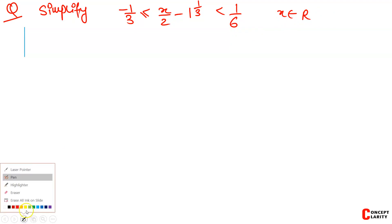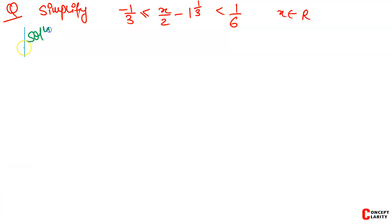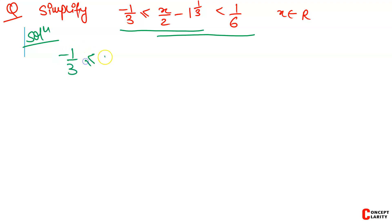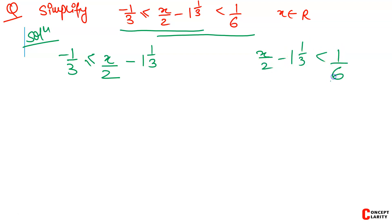How do we do this? I will use a second ink so that you can differentiate. We divide the question into two parts and solve one equation at a time. The first part: minus 1 by 3 is less than or equal to x by 2. And next, x by 2 minus 1 by 3 is less than 1 by 6.